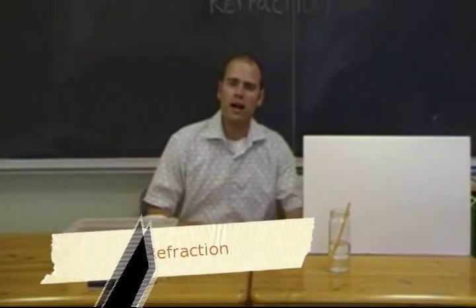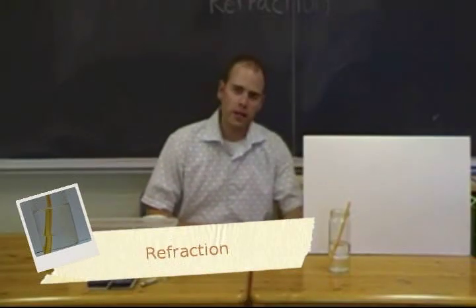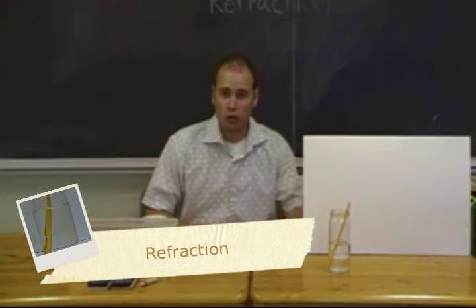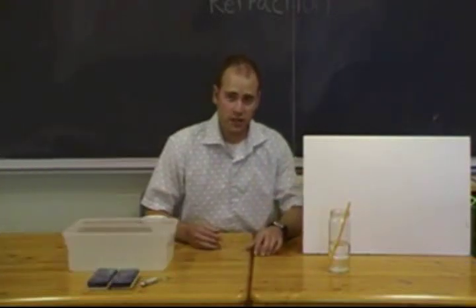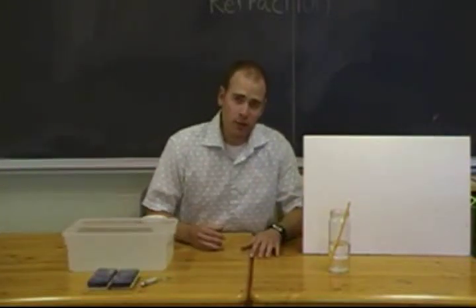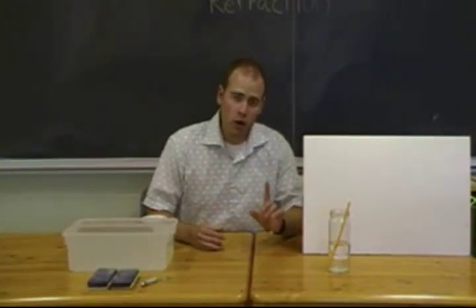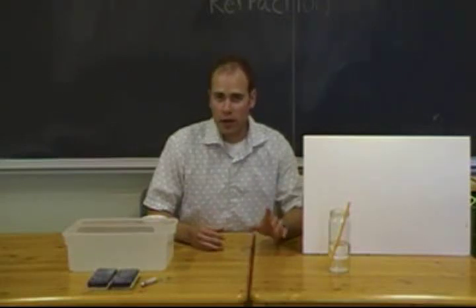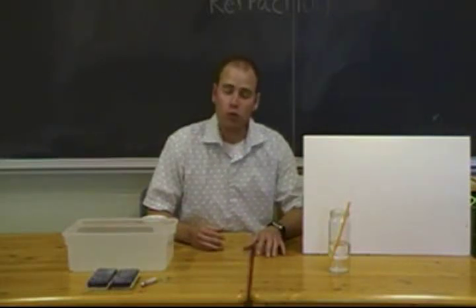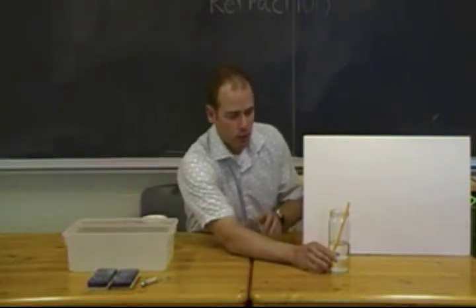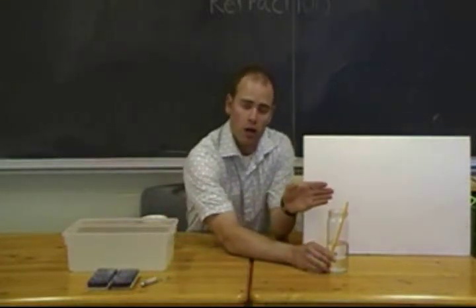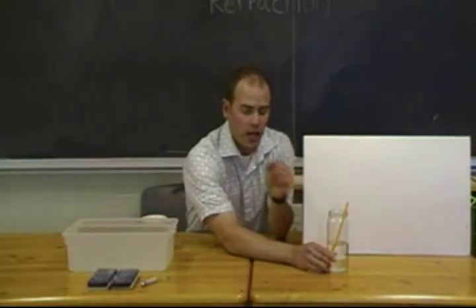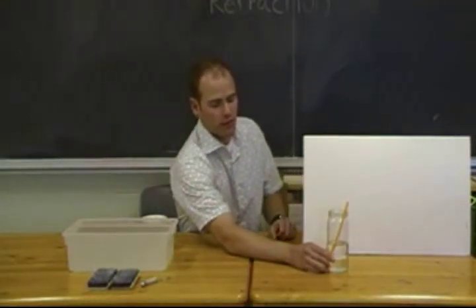We have just seen that light travels in a straight line when it goes through a single substance, but what happens when it goes from one substance to another? That is another key property of light called refraction. A good way of looking at this in your classroom uses a jar, a straw, and a few different types of liquid.